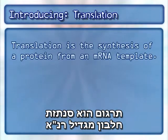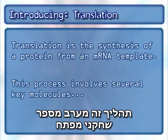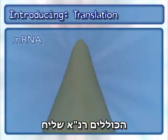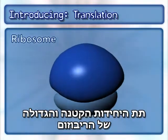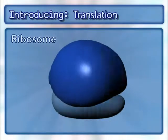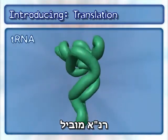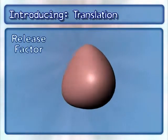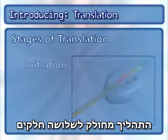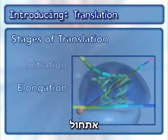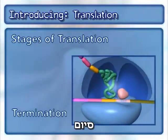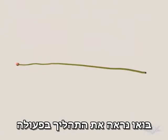Translation is the synthesis of a protein from an mRNA template. This process involves several key molecules, including mRNA, the small and large subunits of the ribosome, tRNA, and the release factor. The process is broken into three stages: initiation, elongation, and termination. Let's see the process in action.